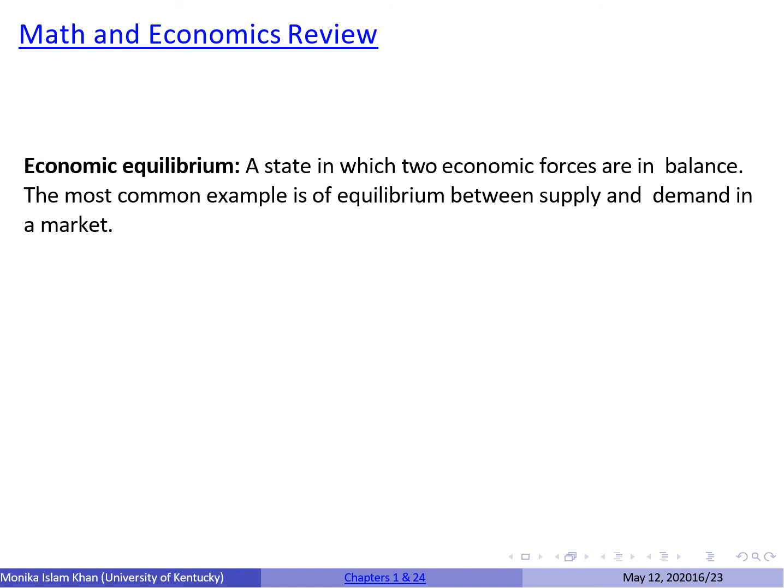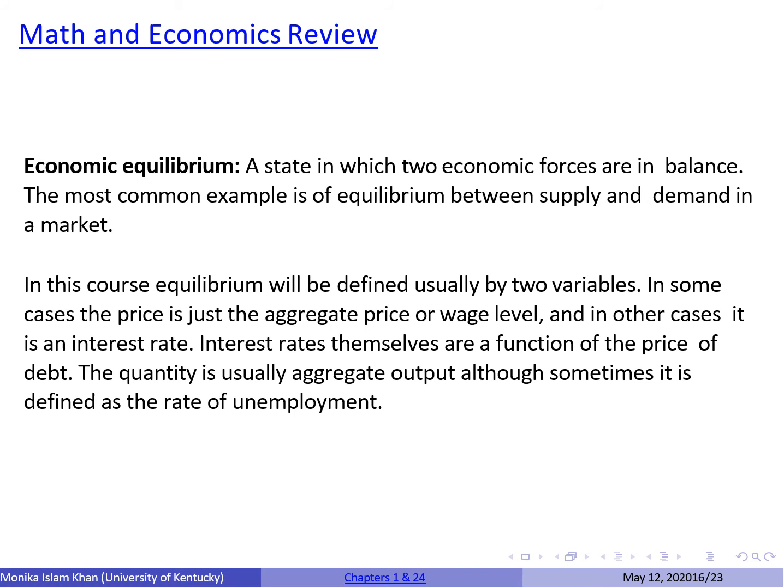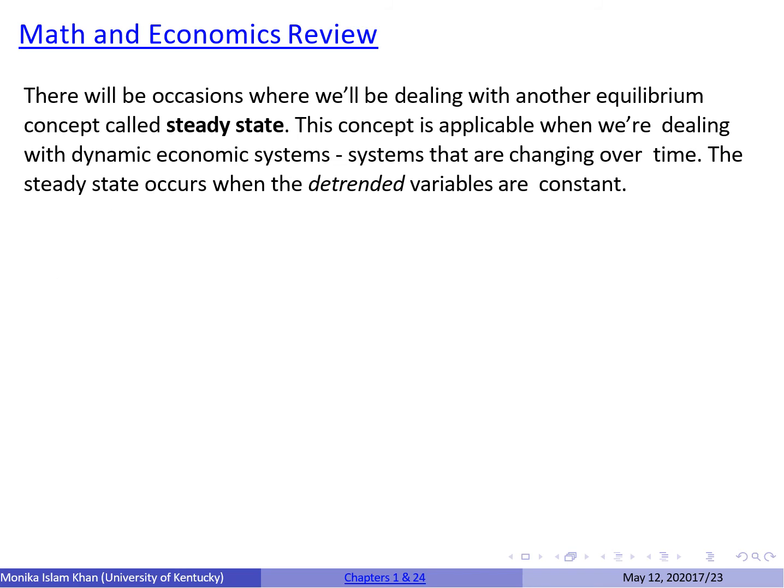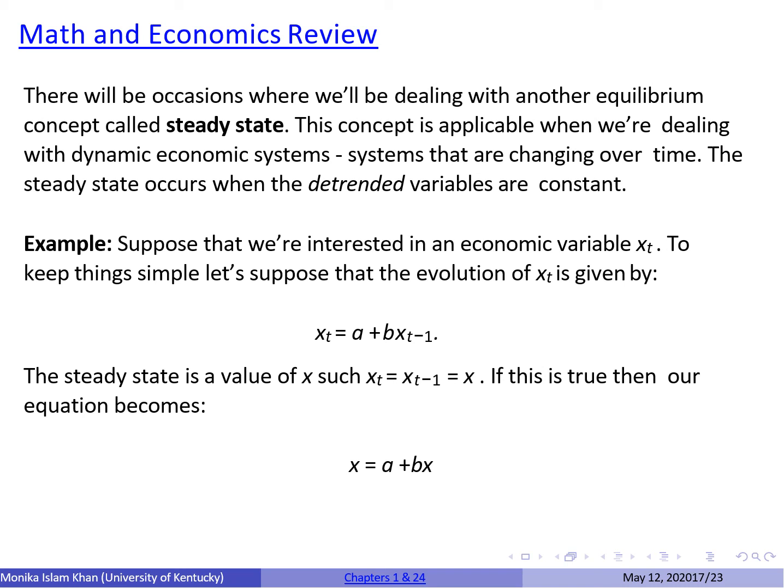We have reached the last part of this lecture: the math and economics review. An economic equilibrium is a state in which two economic forces are in balance — the most common example is the equilibrium between supply and demand in a market. An equilibrium is defined by two variables; in the supply-demand model those are price and quantity; in the labor market they are wage and the number of people employed. We will also deal with the concept of a steady state, applicable in dynamic economic systems — systems changing over time. A steady state occurs when detrended variables are constant; detrending means removing the trend — the increasing or decreasing quality — from a variable.